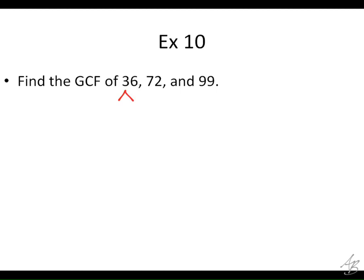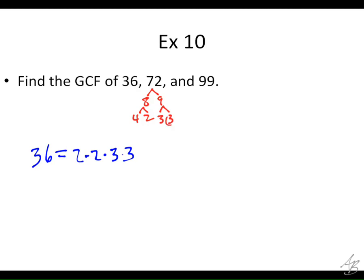Next, we're going to do factor trees. So 36 — we actually did 36 before. We know 36 is 2 times 2 times 3 times 3. For 72, we haven't done that yet. Let's do 8 times 9 — and then 8 is 4 times 2, and 4 is 2 times 2. So 72 is going to be 2 times 2 times 2 times 3 times 3.